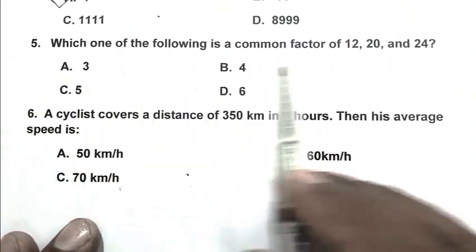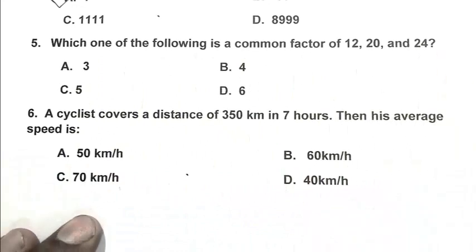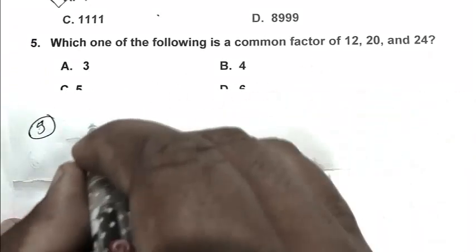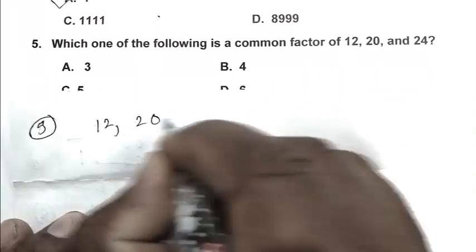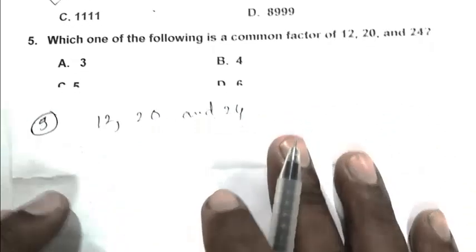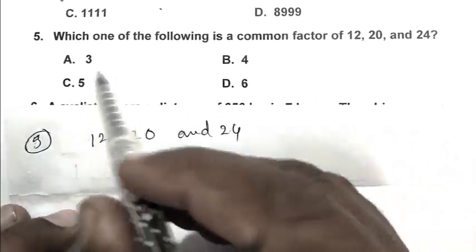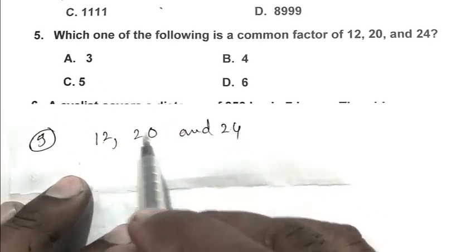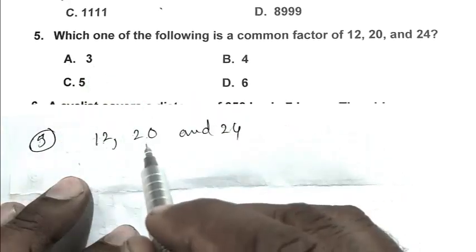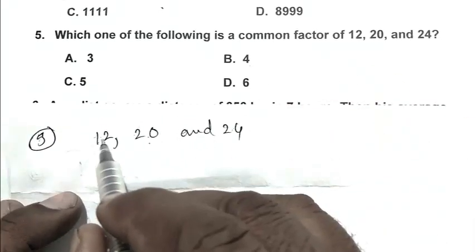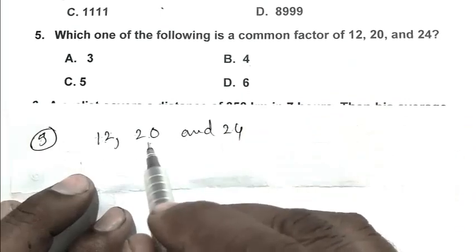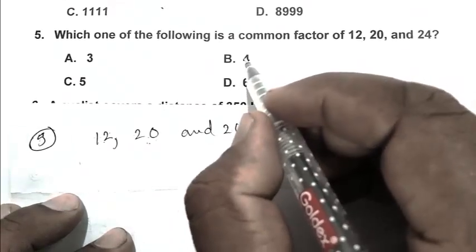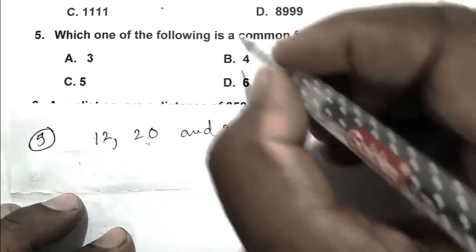Question number 5: Which one of the following is a common factor of 12, 20, and 24? We calculate the answer from the options. Option A is 3. If we divide 12 by 3, we got 4. If we divide 20 by 3, 20 is not divisible by 3, so 3 is not a factor of 20. Option B is 4. If we divide 12 by 4, we got 3. If we divide 20 by 4, we got 5, and if we divide 24 by 4, we got 6. So 4 is the common factor of 12, 20, and 24. So B is the right answer.